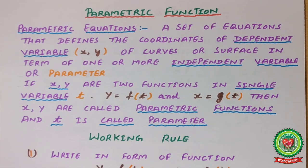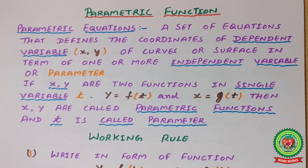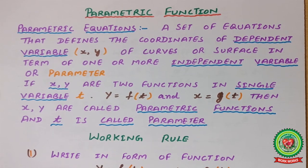The independent variable is called the parameter. For example, if x = 2t, y = 4t, z = 60, then x, y, and z are all dependent variables and their values depend upon the value of t. That means t is the parameter and x, y, z are the dependent variables whose values depend upon t.